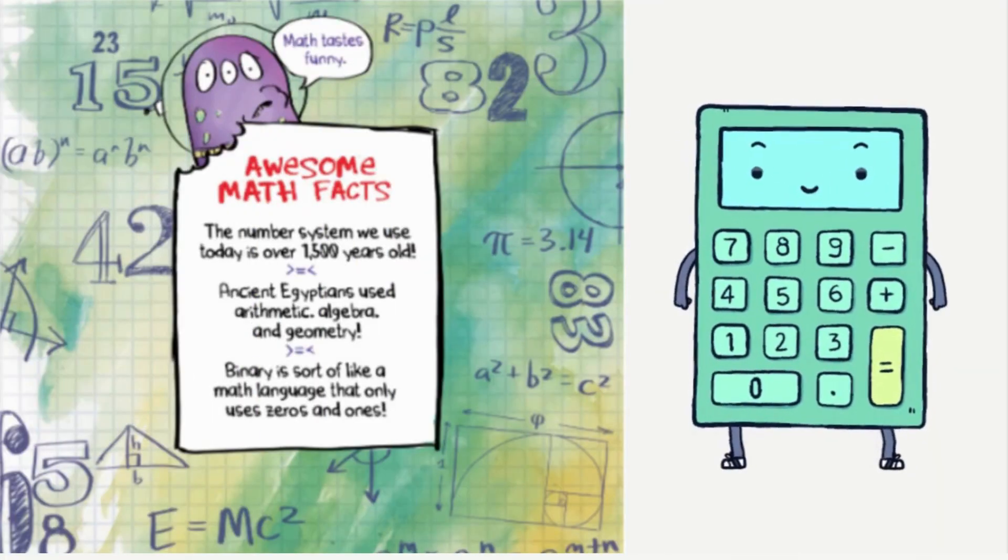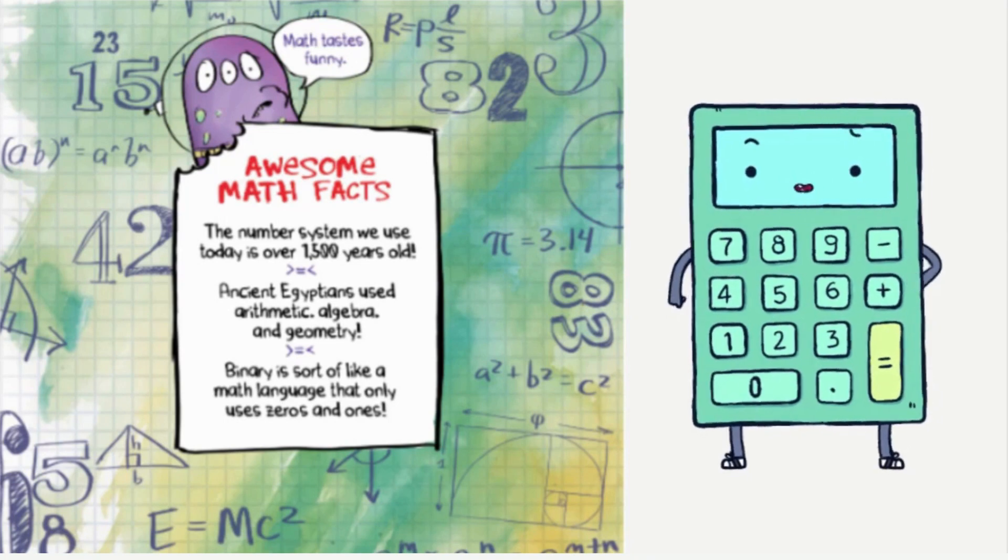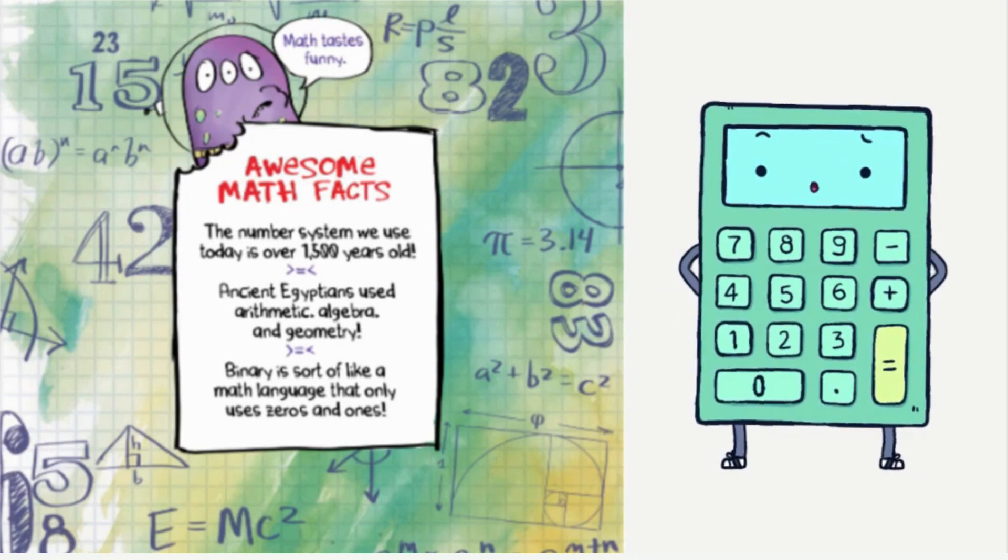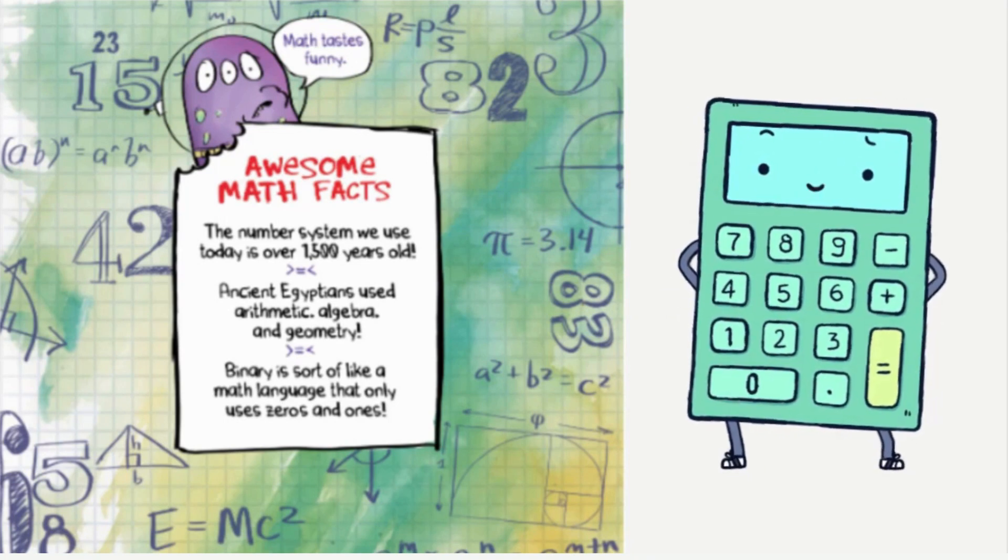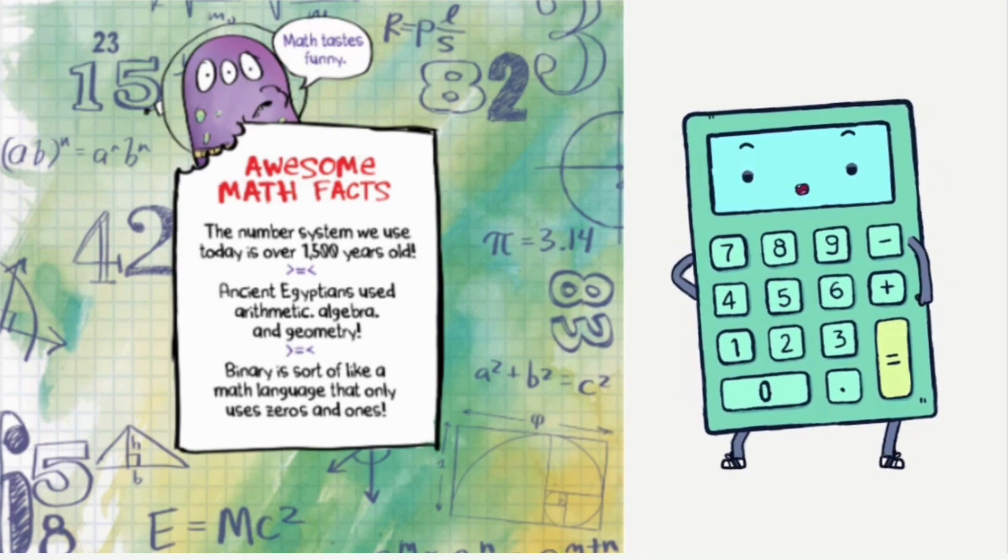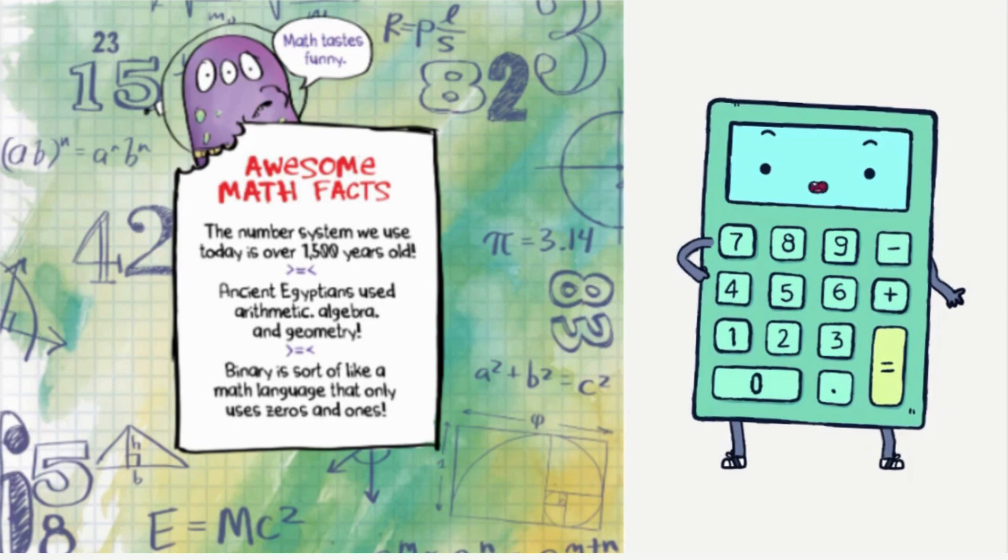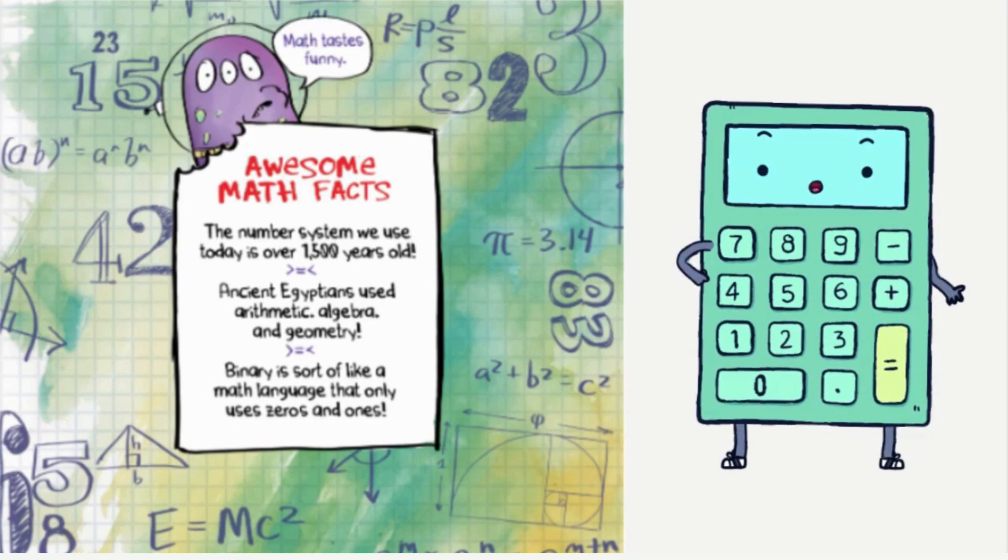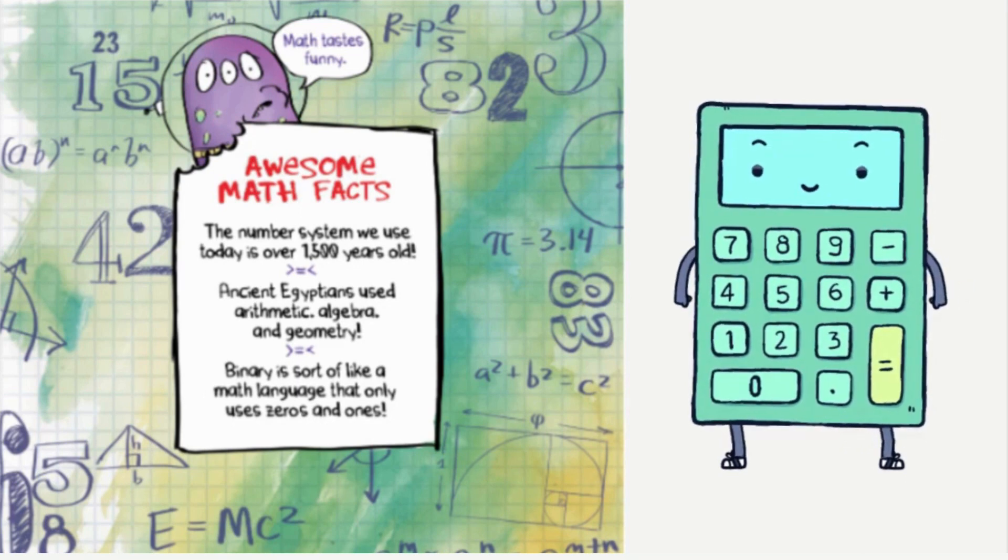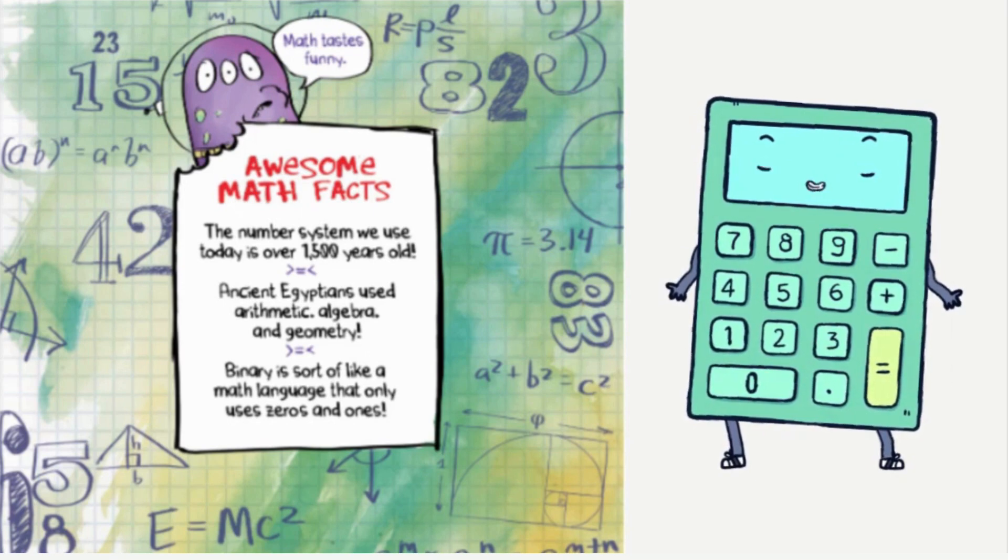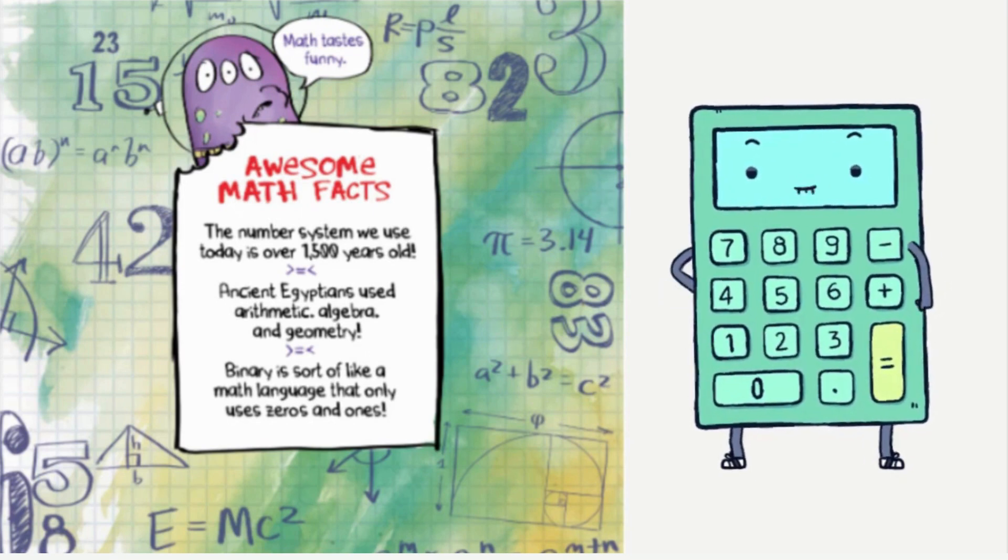Math tastes funny. Awesome math facts. The number system we use today is over 1,500 years old. Ancient Egyptians used arithmetic, algebra, and geometry. Binary is sort of like a math language that only uses zeros and ones. I hope you've enjoyed the story, and I hope you'll love math.